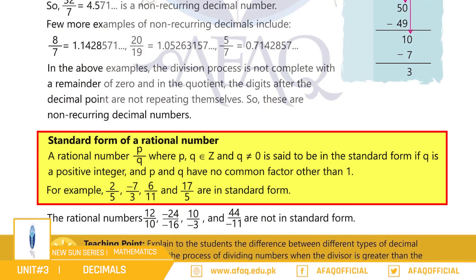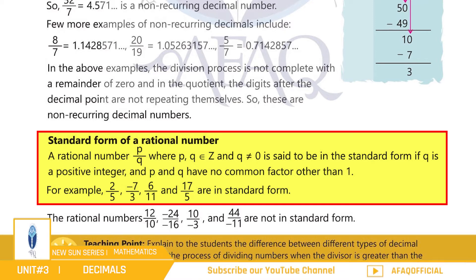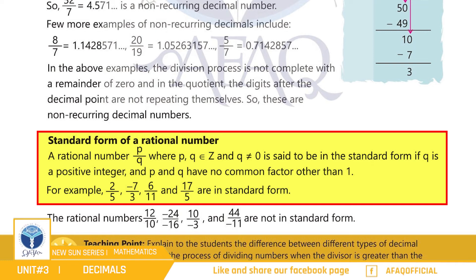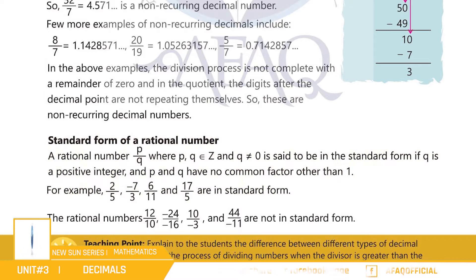اب ہم Standard Form of Rational Number page 44 پر پڑھیں گے۔ ایک rational number p/q جس میں p اور q integers ہوں اور q zero کے برابر نہ ہو، کو ہم standard form کہیں گے اگر q ایک positive integer ہو اور p اور q کے درمیان 1 کے علاوہ کوئی بھی common factor نہ ہو۔